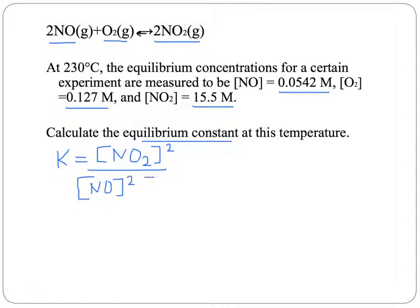over the concentration of our reactants, which are nitrogen monoxide, also squared because that's the coefficient, times oxygen gas, which doesn't have any exponent because the coefficient is just 1.